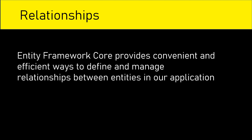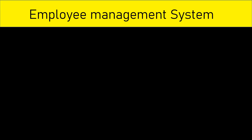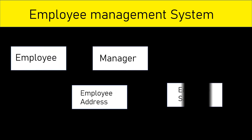To understand relationships, first we should understand the application or the system that we are building. Let's take an example of an Employee Management System and try to understand the concept of relationships. In an Employee Management System, there will be different entities like Employee, Manager, Employee Address, Employee Salary, and so on. All these entities are represented as domain classes in our application.